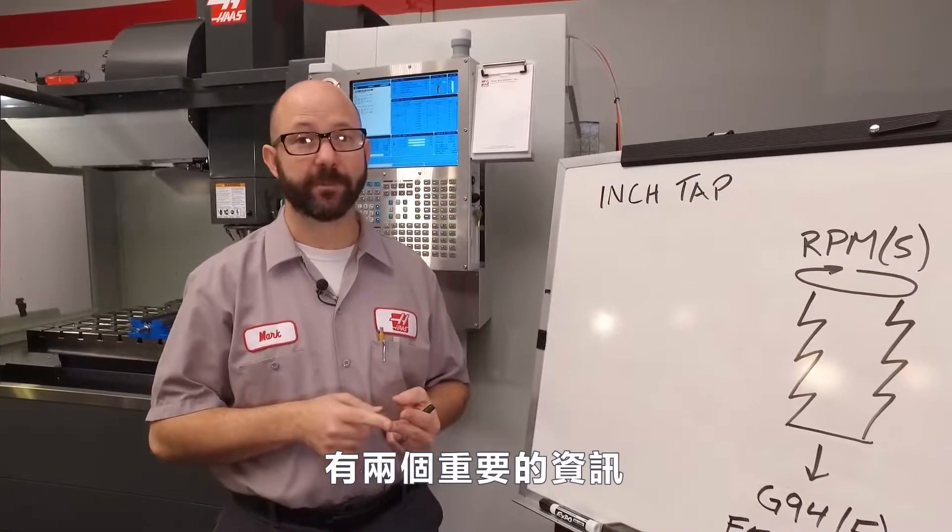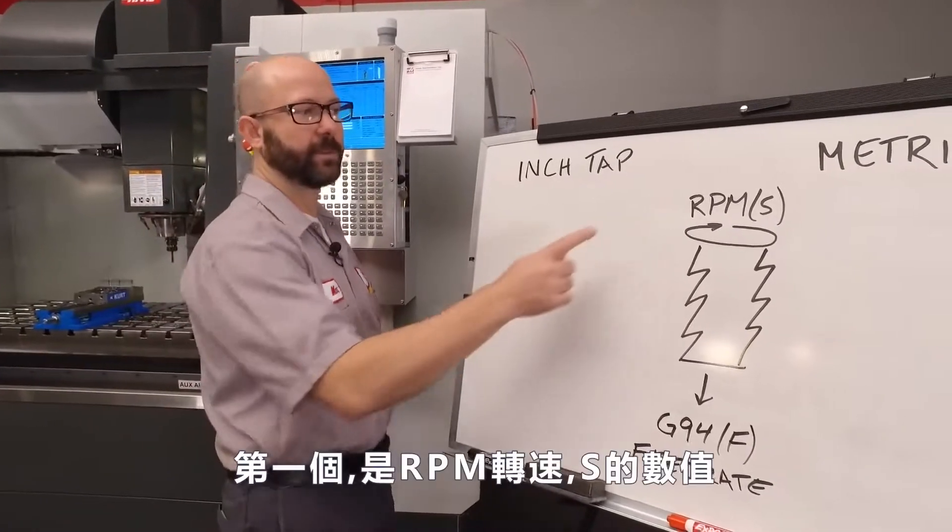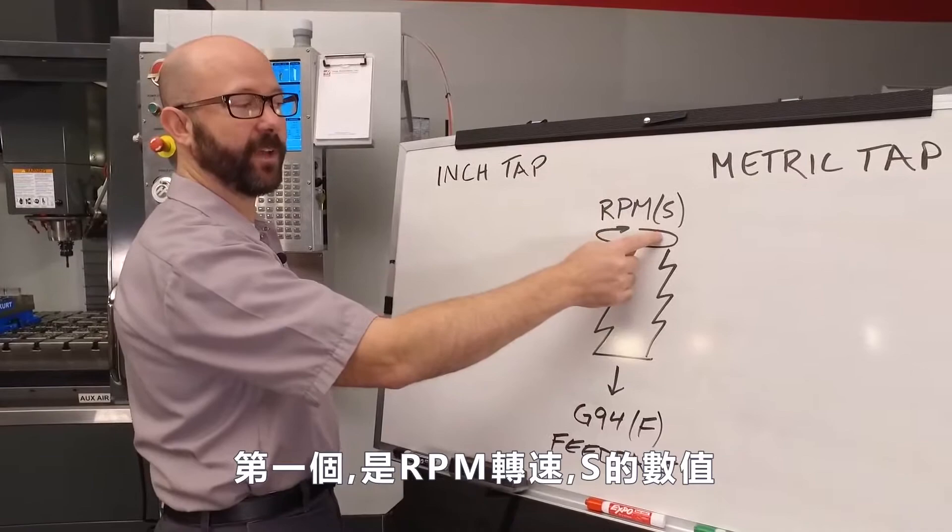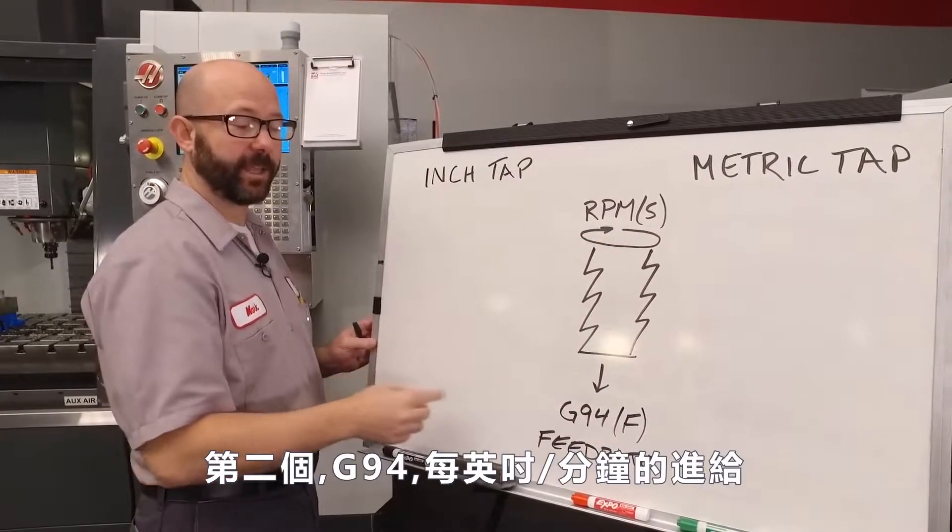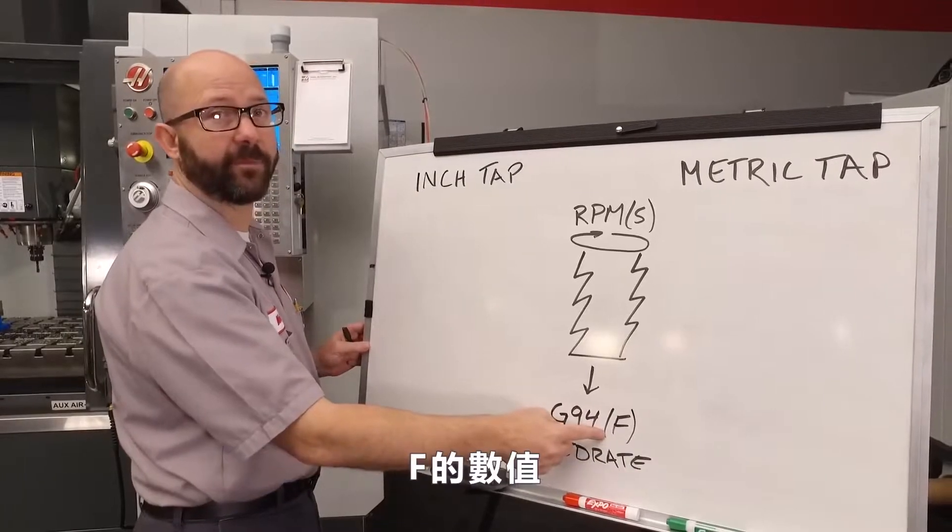Now there are two critical pieces of information that our G84 tapping cycle needs. The first is our RPM, our S value. The second is our G94 inch per minute feed rate, our F value.